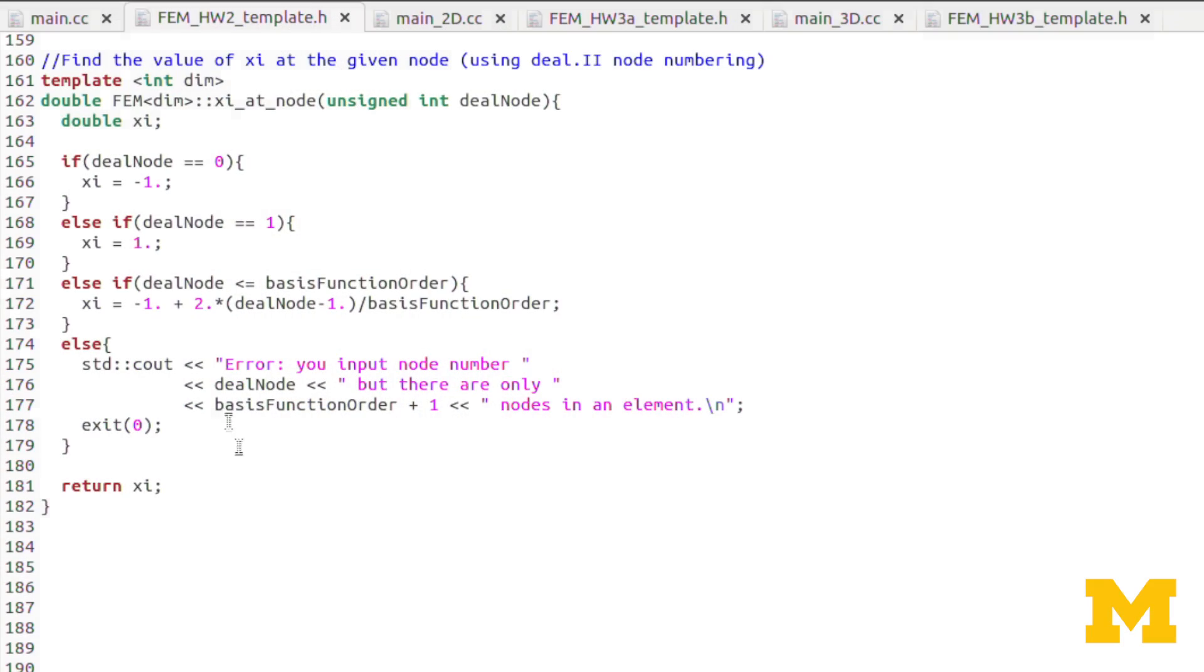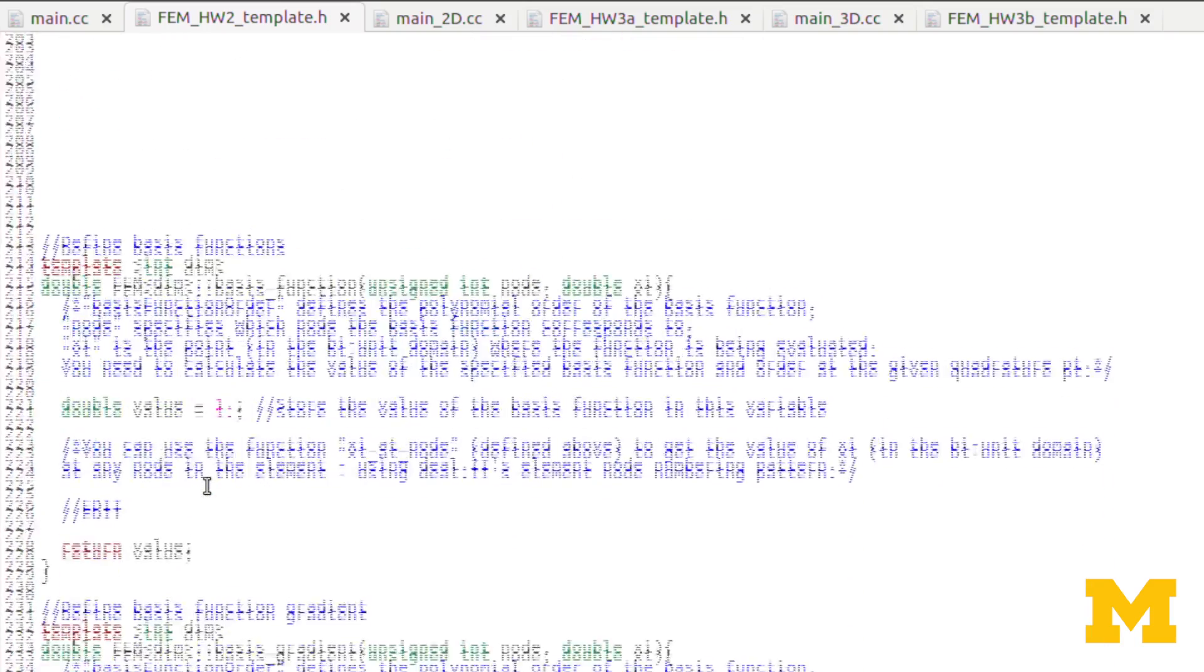So that will come into play as you're defining your basis functions, as you'll see in a minute. So you actually don't need to define anything within this object xi at node. It's just there in case you want to use it. You actually don't need to use it if you don't want to. All right. Let's move on to the next functions.